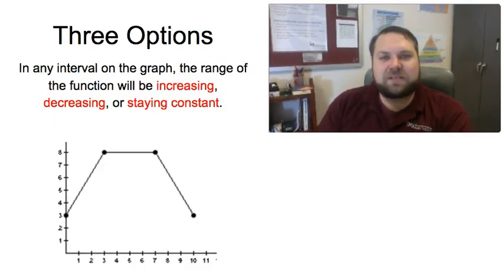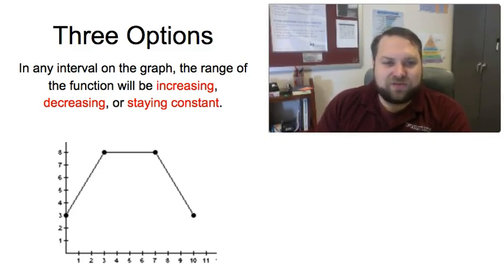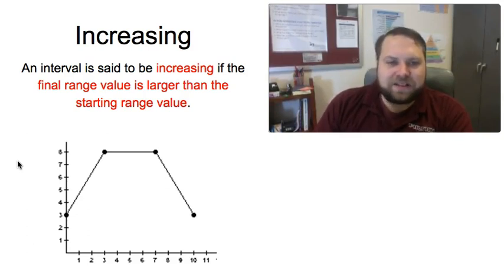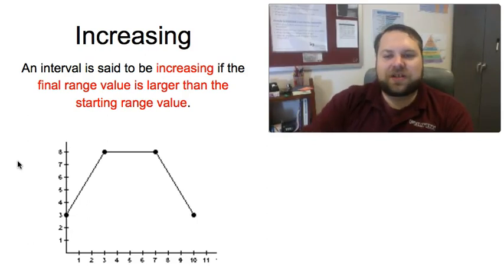For any one of those intervals there are only three possible options. We can either say that interval is increasing, decreasing, or staying constant based on what the range values do over the course of that part of the domain. If an interval is increasing, the final range value is going to be larger than the starting range value. When I say final and starting, I start from the left and move towards the right, just like reading.